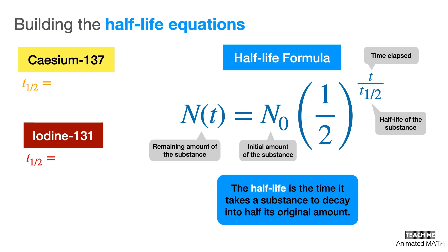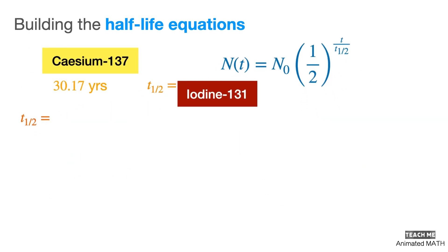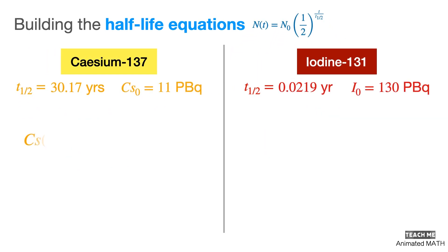Cesium-137 has a half-life of 30.17 years, and iodine-131 has a half-life of only 8 days. But before we start substituting values into the equation, let's agree to use years as the unit for time. This would make the half-life of iodine-131 a 0.0219 years. Let's now assemble our half-life equations for the radioactive elements using the reported initial amount and their half-life values.